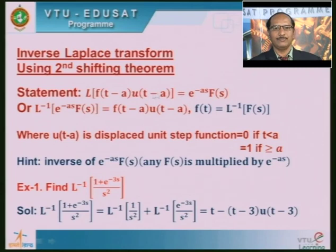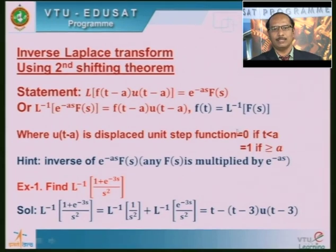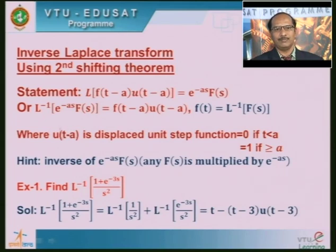Here u(t-a) is a unit step function. There are two types of unit step functions: u(t) at the origin, and u(t-a), the displaced unit step function. Its values are defined as: u = 0 if t < a, and u = 1 if t ≥ a. Suddenly at t = a its value becomes 1. This function is the unit step function displaced a units from the origin.